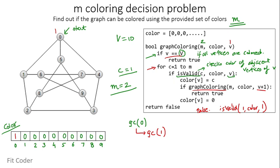The for loop continues with C=2. We call isValid for C=2 at vertex 1. The adjacent vertices of 1 are 0, 6, and 2, and none of them is colored 2. So vertex 1 is colored 2.